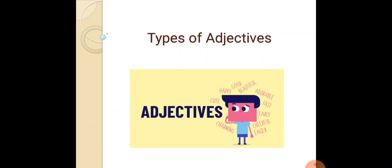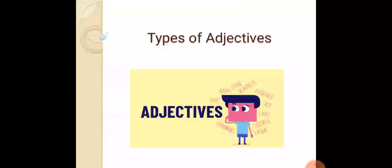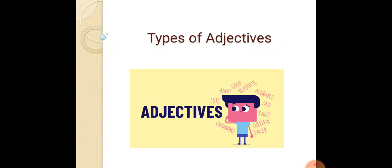First I will tell you the definition of adjective. Adjective is a part of speech that describes a noun or a pronoun. For example, this is a beautiful building. In this sentence, building is a noun, and we used the word beautiful. That beautiful word is an adjective, and it is describing the noun — beautiful is describing the building. That's why it is called an adjective. So this was the definition of adjective.